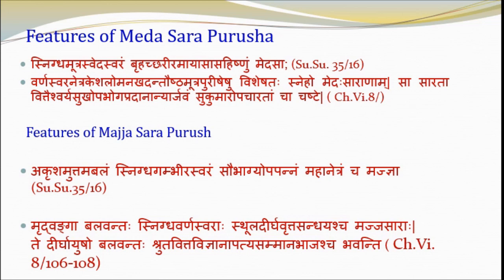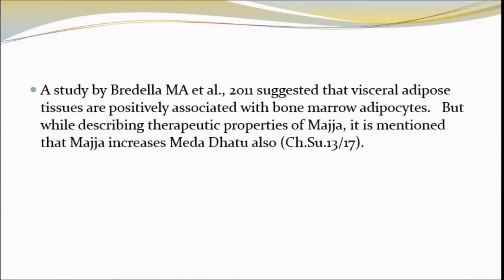Features of Majja Sara Purusha — individuals having Majja as constitutional essence have soft organs, are strong, have unctuous complexion and voice, thick and long rounded joints, good longevity, strength, and are endued with learning, wealth, critical understanding, progeny and respect. A study by Bradla M. et al. suggested that visceral adipose tissues are positively associated with bone marrow adipocytes, and while describing the therapeutic properties of Majja, it is mentioned that Majja increases Medha Dhatu also — suggesting the plasticity between bone marrow and visceral adipocytes.